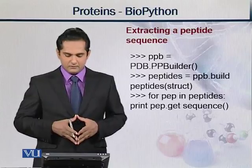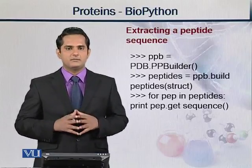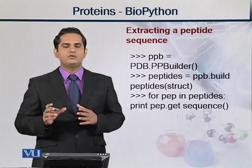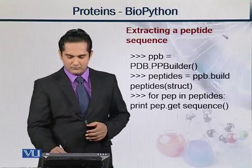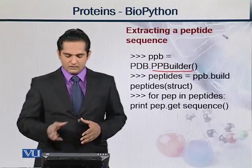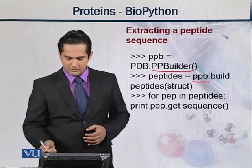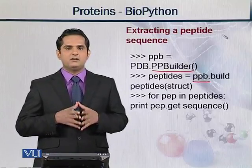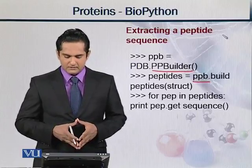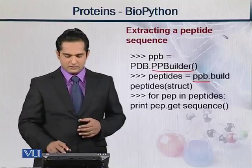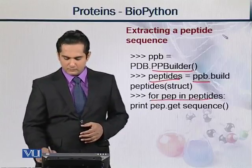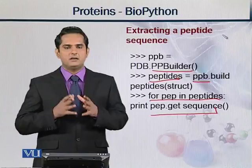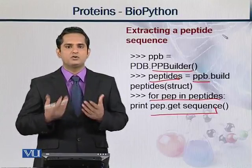Then moving on, ppb = PDB.PPBuilder. Ab structure humare paas aa gaya tha last command se, which was very similar to the commands given on the first slide. Ab wahan se hum kya karte hain — us structure mein se peptide bonds jo hain, unka structure build karna chahte hain, ya read karna chahte hain. For that purpose we have the PPBuilder command. Then for coming to peptides complete, what we do — this peptide ppb object dot build_peptides using that structure. Ab kya hoga ki jo peptide bonds ke structures hain, unko build karegi yeh command, aur uske baad hum kya chahte hain ki jitne bhi peptides hain, in peptides ka structure hai — us structure mein jitne bhi peptides hain, un sab ko aap print karwa do. Yani ki sari ki sari information — to iska end effect yeh hoga ki protein structures mein jitne bhi peptide bonds ke sequences hain, woh sab ke sab humare paas print honge, show honge on our monitor.